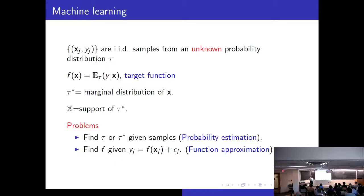Then the other component of my talk is machine learning. We have IID samples from some unknown probability distribution and we have a certain target function which is the conditional expectation of Y given X. We have a certain marginal distribution for X and this X is the support of this measure. There are two kinds of problems: either we're interested in figuring out what is τ* or otherwise we're interested in figuring out what is the target function. This is the probability estimation problem. This is the function approximation problem.